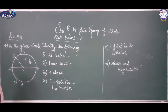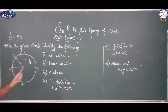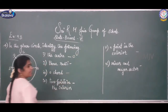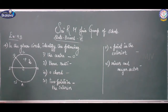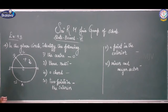Shall I move on to the next sum? Now moving to the fourth sum. Here a circle is given and I am going to find out the parts of a circle. What is the centre? The centre is marked as O.